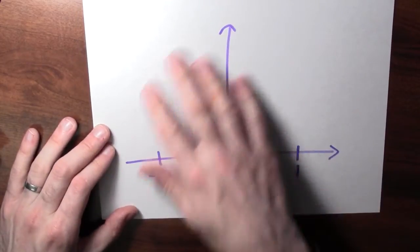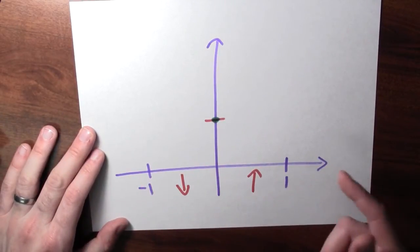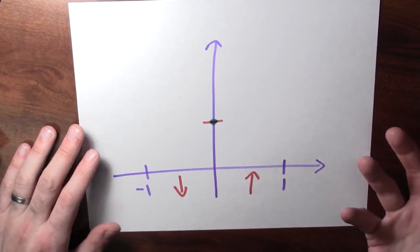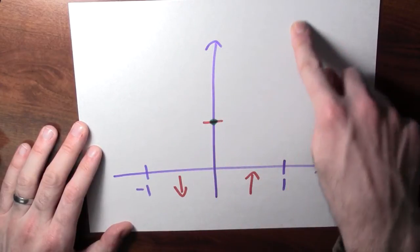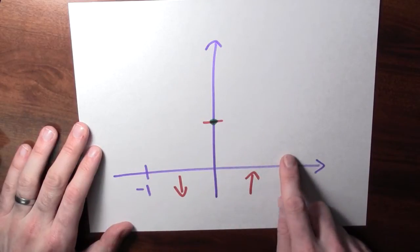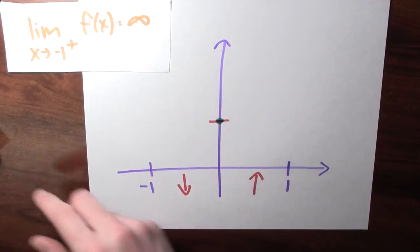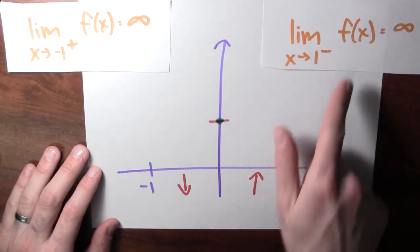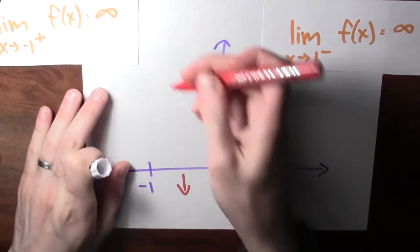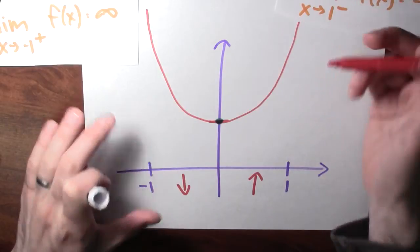Let's imagine drawing a graph of the function. From the derivative, the function is decreasing between minus 1 and 0, and increasing between 0 and 1, with a local minimum at 0. But near x equals minus 1 and near x equals 1, the function becomes very, very large. So the graph comes down, flattens out at the minimum, and then gets very large again near both endpoints.